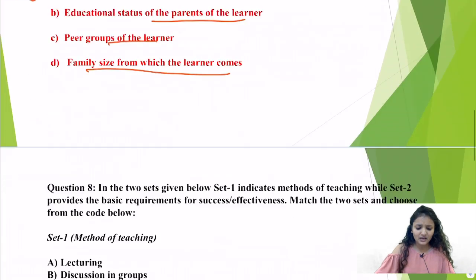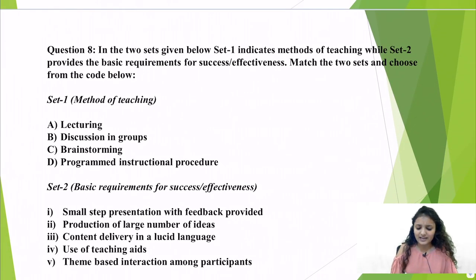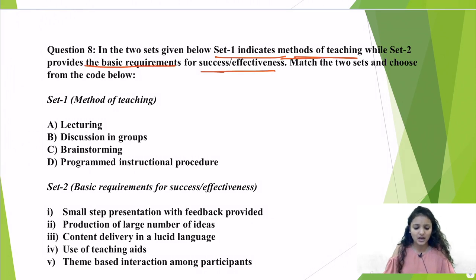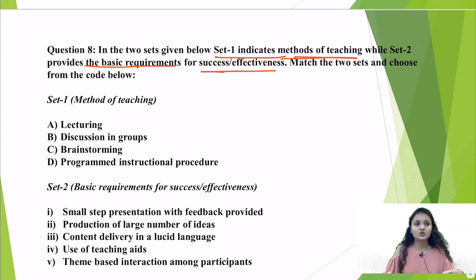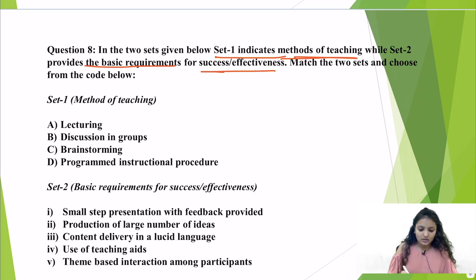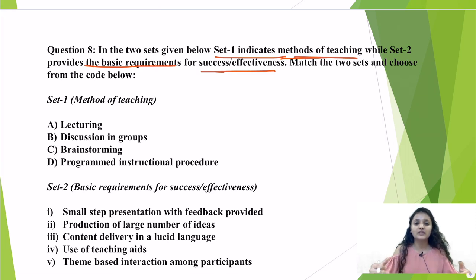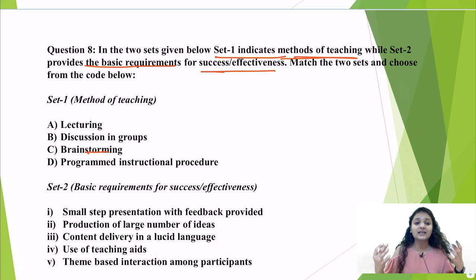Question number 8: two sets are given where Set 1 indicates methods of teaching and Set 2 indicates basic requirements for success and effectiveness. Lecturing is a teacher giving a lecture to many students simultaneously in a classroom. Discussion in groups means four to five people having a theme-based discussion on a common topic. Brainstorming involves spontaneous ideas — a teacher asks students to think freely, and creative thinking from any point of view is welcome.